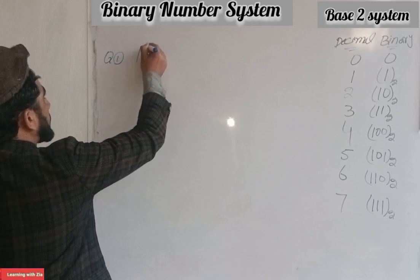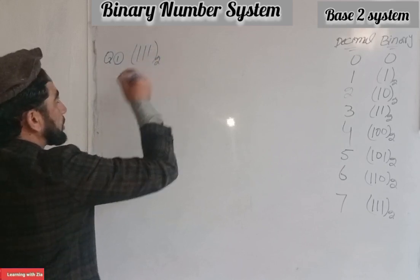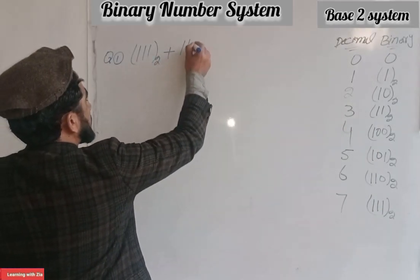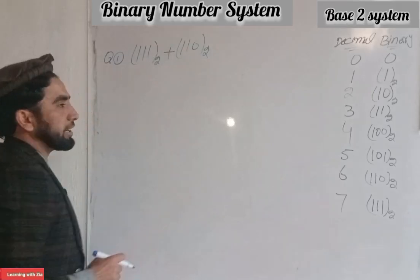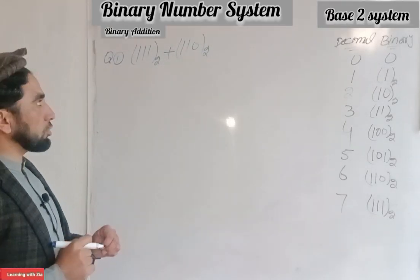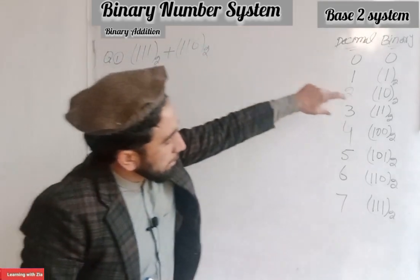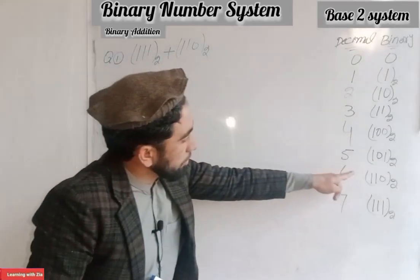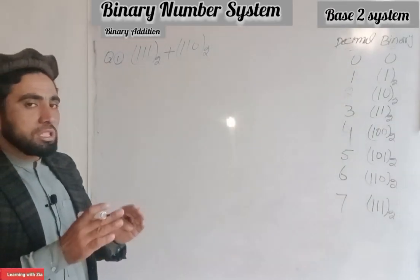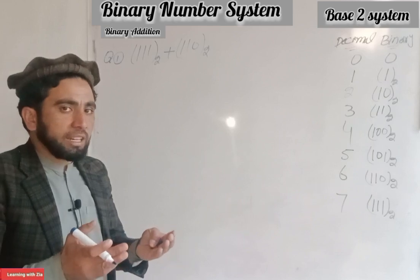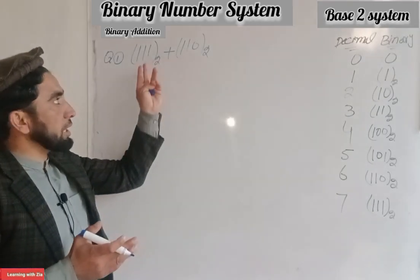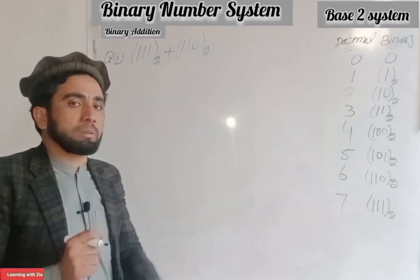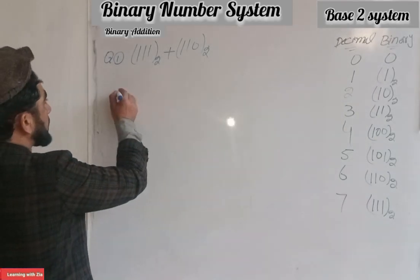For binary addition, for example: the numbers 111 and 110. Adding 8 — the binary number 1110 plus 1111 equals, and 110 is equal to six, seven plus eight gives the result. The result in the decimal system is 13.